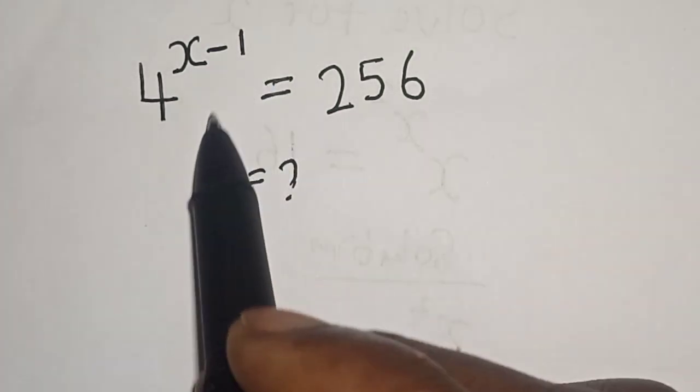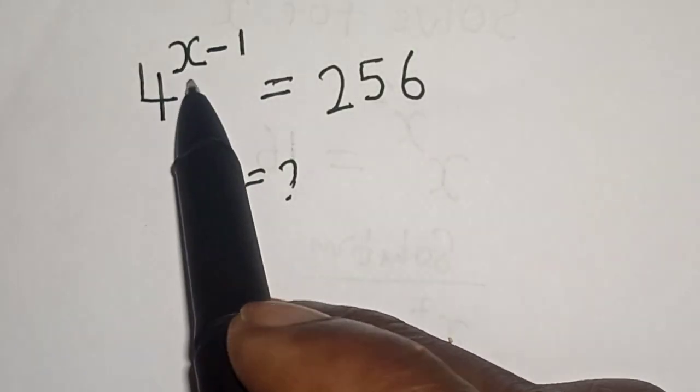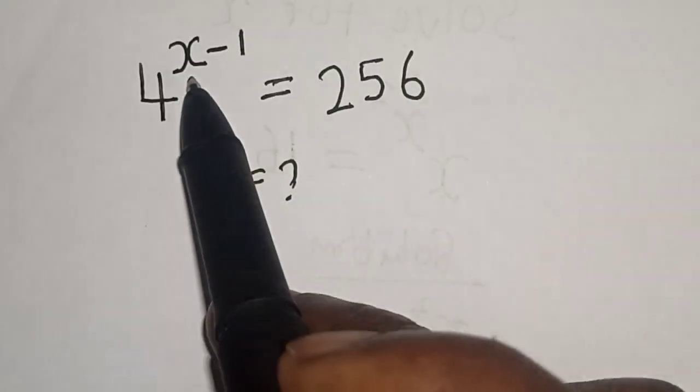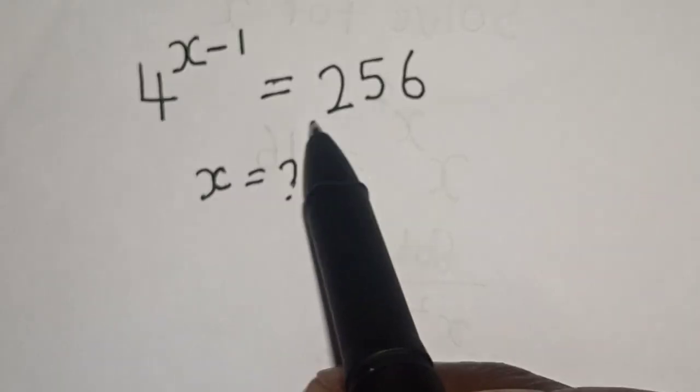Hi everyone, welcome to my class. In this class we want to find the value of x from this given equation: 4 raised to power x minus 1 is equal to 256.